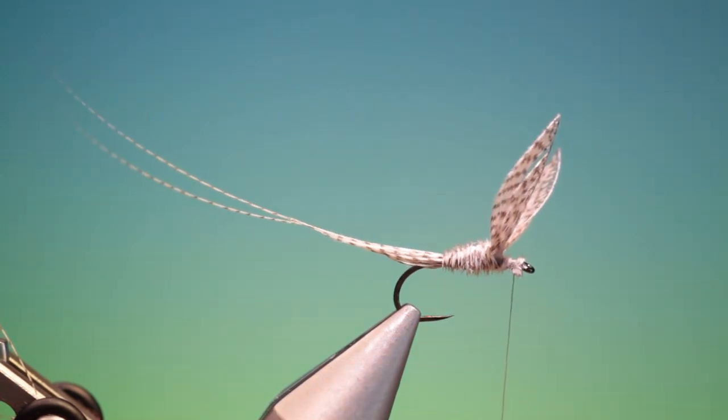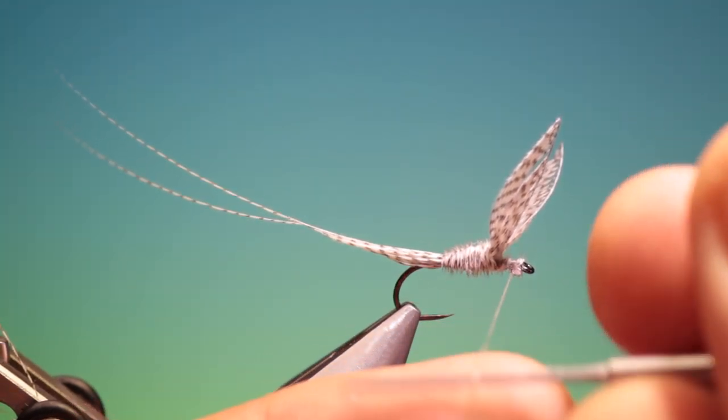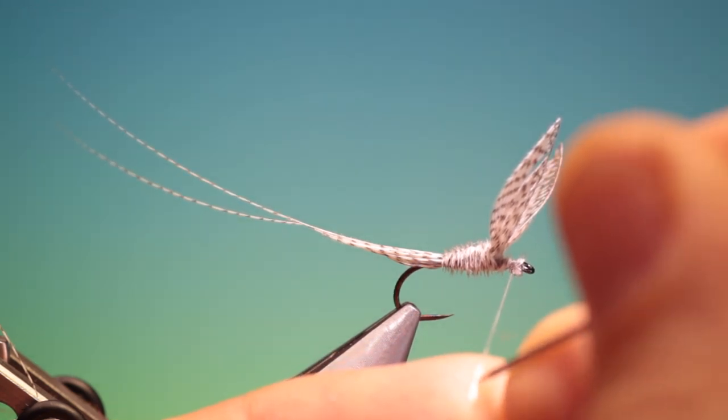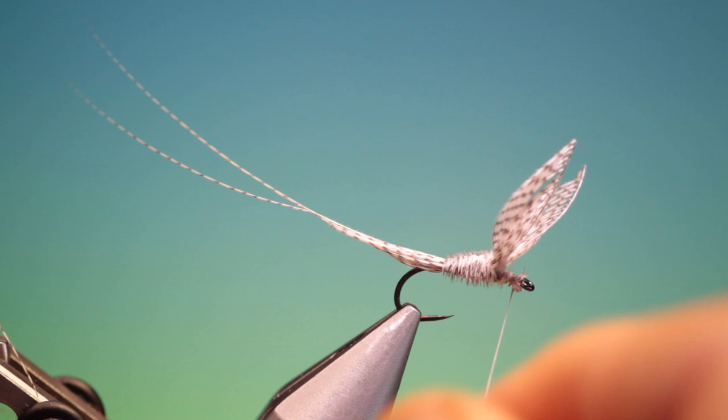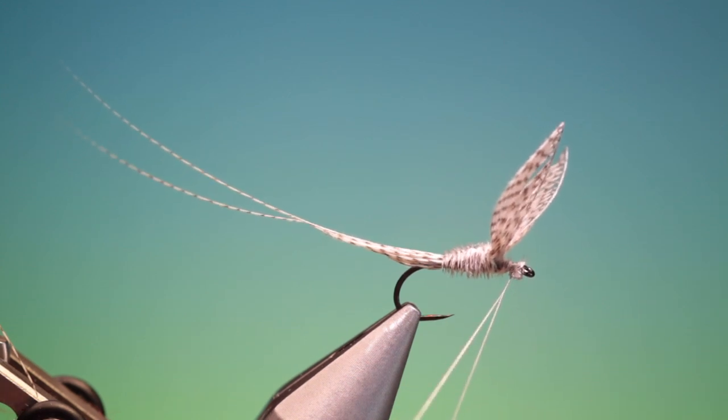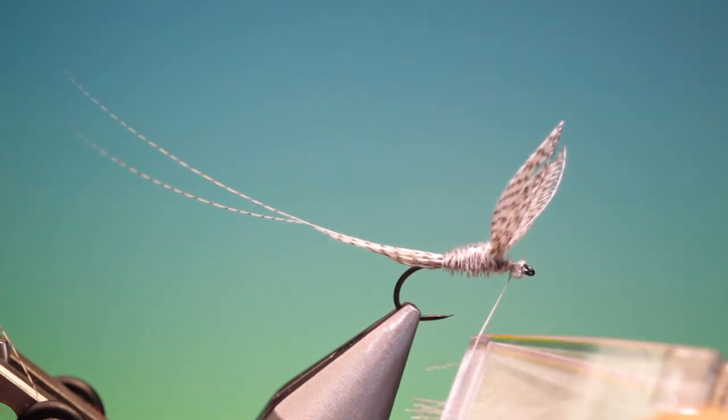Spin our tying thread anti-clockwise and split the thread into a dubbing loop. Use a magic clip here with one blue dun CDC hackle.